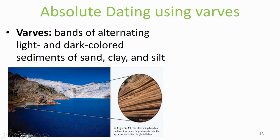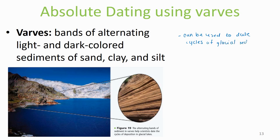The final way we can use absolute dating is by using varves. Varves are bands of alternating light and dark colored sediments of sand, clay, and silt. The summer deposits are generally light, large, sand-sized particles, while the winter deposits are dark, fine-grained sediments. Varves are typical of lake deposits near glaciers where sedimentation happens in the summer during melt waters, but not during winter. Because of this, varves can be used to date cycles of glacial sedimentation.